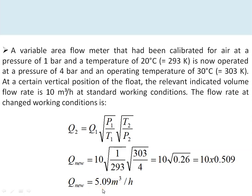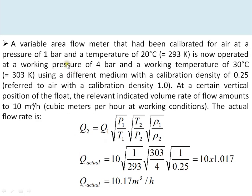In a second example, in addition to pressure and temperature changes, the gas density also varies. The standard operating condition is 1 bar and 20°C; the rotameter is now used at 4 bar and 30°C. It is calibrated for air (density = 1 kg/m³) but the actual medium has a density of 0.25 kg/m³. The rotameter indicates 10 m³/h; applying the combined correction factor of 1.017 gives an actual flow rate of 10.17 m³/h. These correction factors for temperature, pressure, and density must always be considered when using a rotameter for gas flow measurement.